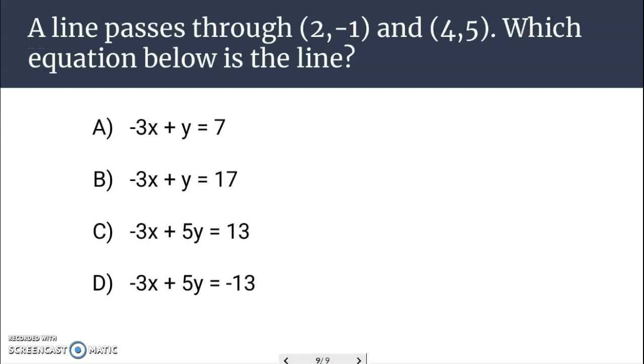Finally, a line passes through the point (2, -1) and (4, 5). Which equation below is the line? Okay. Well, we can follow the steps before and create a line in slope-intercept form and then match it to this, but we have to move some things around. Another way is to test each point, this x, y, and also this x, y, one at a time, in the equations and see which equation satisfies both points.